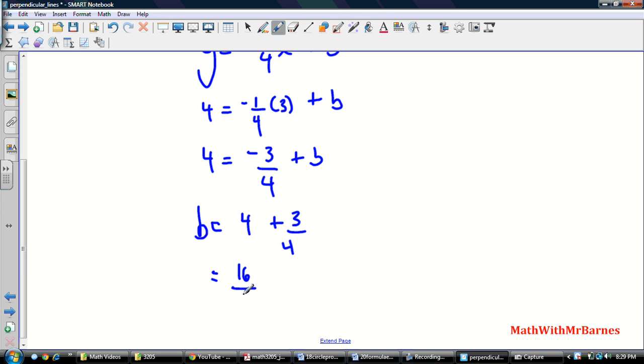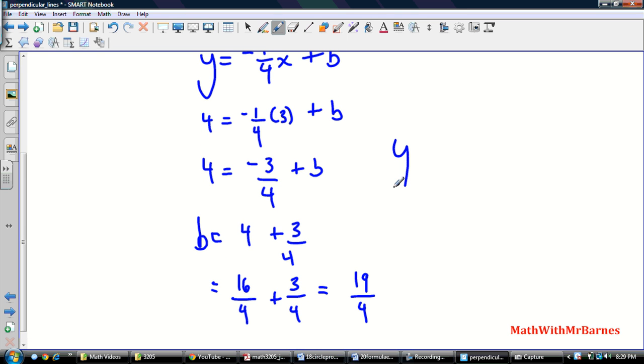I'm going to find a common denominator, so that's going to be 4. This is going to be 16 over 4 plus 3 over 4, which equals 19 over 4. So now the equation of my new line is y equals negative 1 over 4 x plus 19 over 4. That's the equation of my line, just like that.